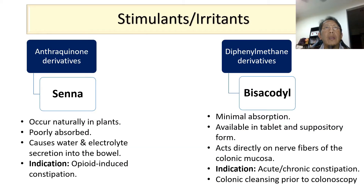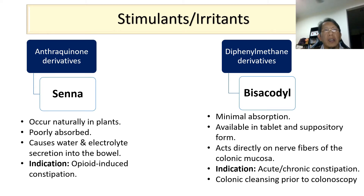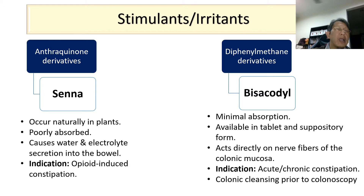In the group of stimulants or irritants, senna is widely used as a stimulant laxative. Senna is indicated in patients who develop constipation due to opioids. Senna is a herb, and the leaf and fruit of the plant are used to make these medications. It is an over-the-counter laxative, so no prescription is needed.